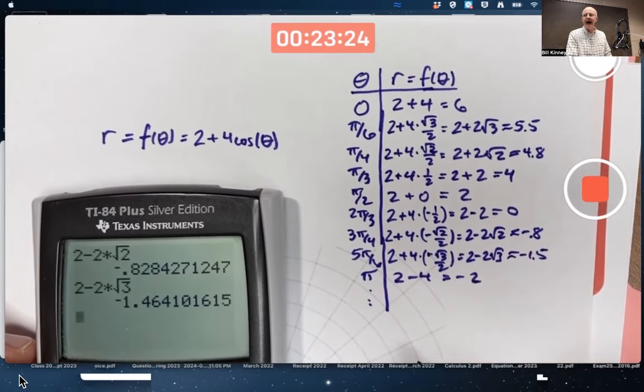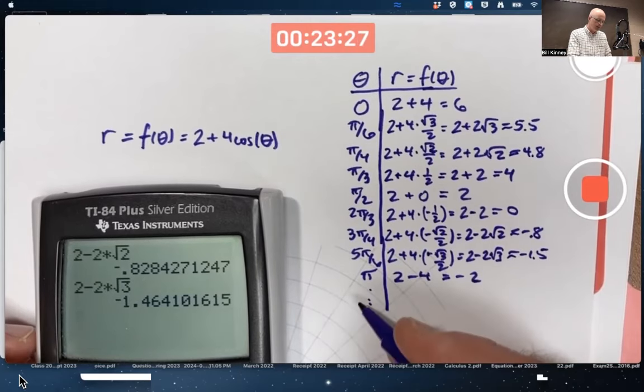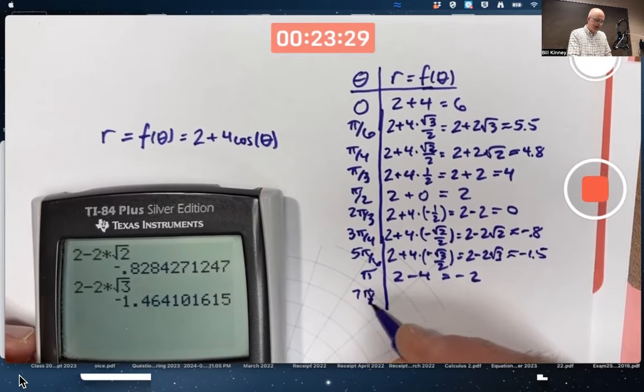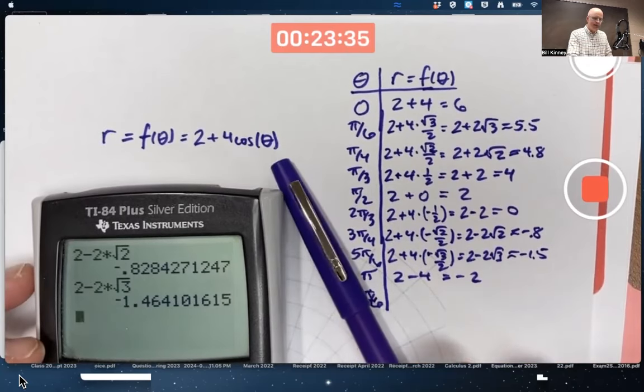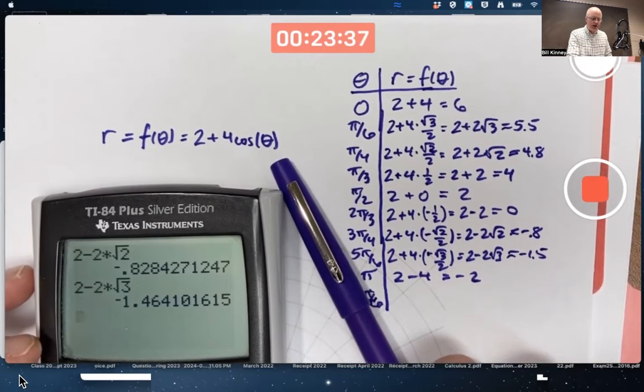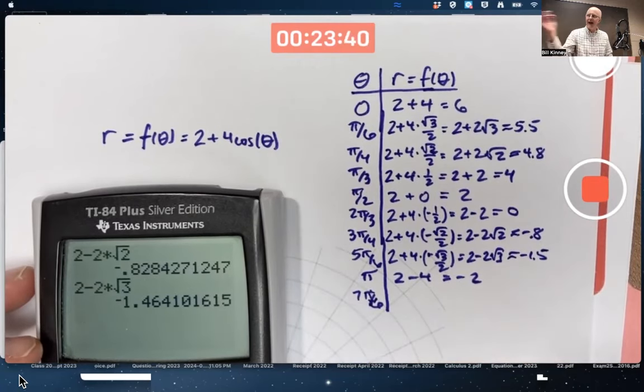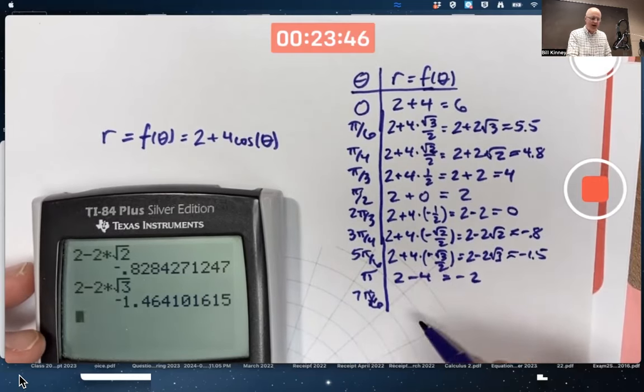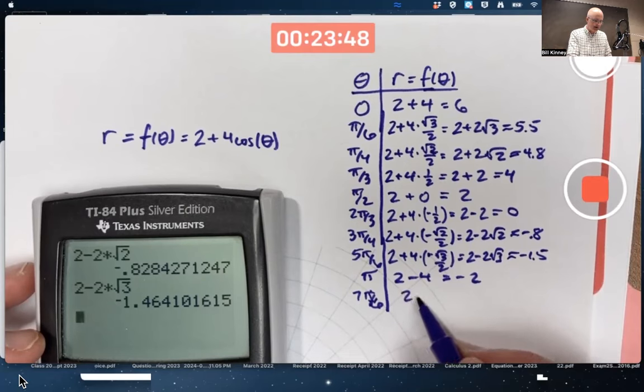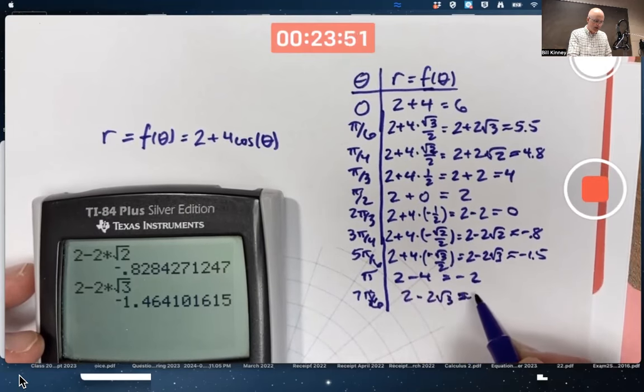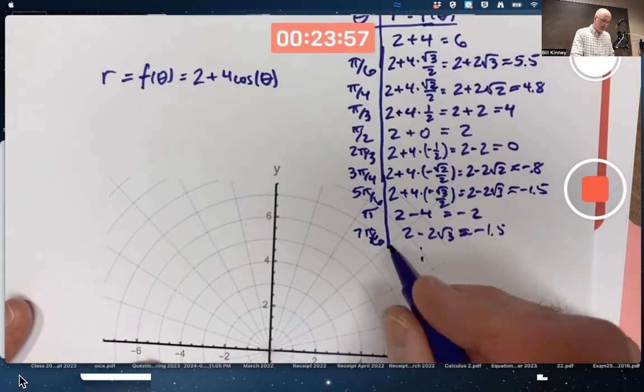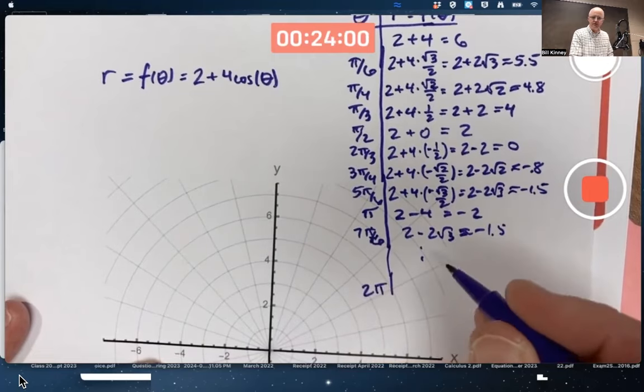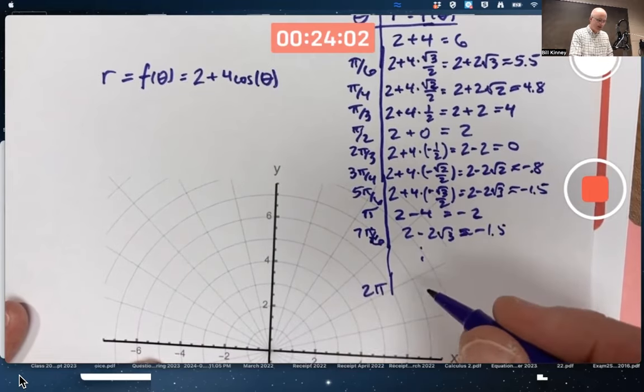And once we go past pi. Okay, I'll do one more. Say it's 7 pi over 6. The most negative value that cosine takes on is negative 1. At this angle, a little bit past pi, cosine starts increasing. In fact, we're going to get the same thing as we get at 5 pi over 6. This is going to be 2 minus 2 root 3. About negative 1.5. Etc. And I can keep going around the horn. Once I get back to 2 pi all the way around the circle, I'm back to 6.